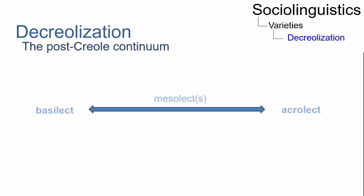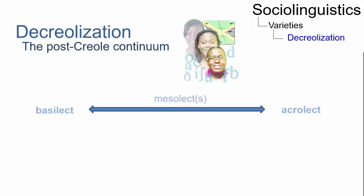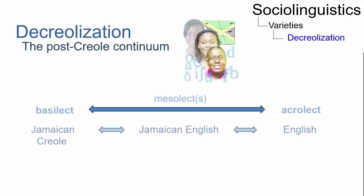An example is the Creole continuum in Jamaica. It ranges from the basilect Jamaican Creole, which emerged from a pidgin and was initially used by slaves, to Jamaican English as a mesolect decreolized from the basilect to the acrolect English.